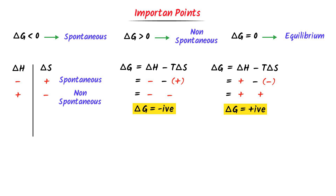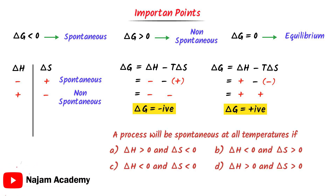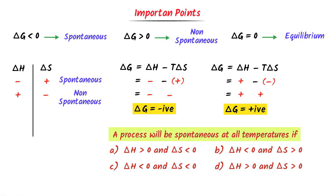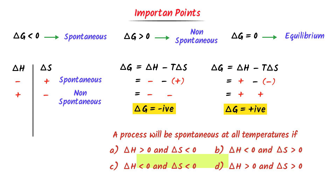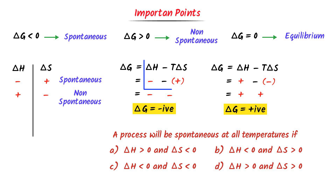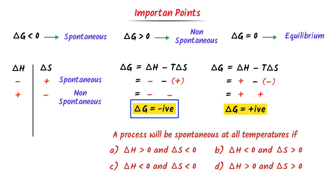Now, consider this important MCQ from a competitive exam: 'A process will be spontaneous at all temperatures if...' Option A: ΔH > 0 and ΔS < 0. Option B: ΔH < 0 and ΔS > 0. Option C: ΔH < 0 and ΔS < 0. Option D: ΔH > 0 and ΔS > 0. We know that when ΔH is negative and ΔS is positive, ΔG will be negative and the process is spontaneous at all temperatures. Hence, the correct option is B.